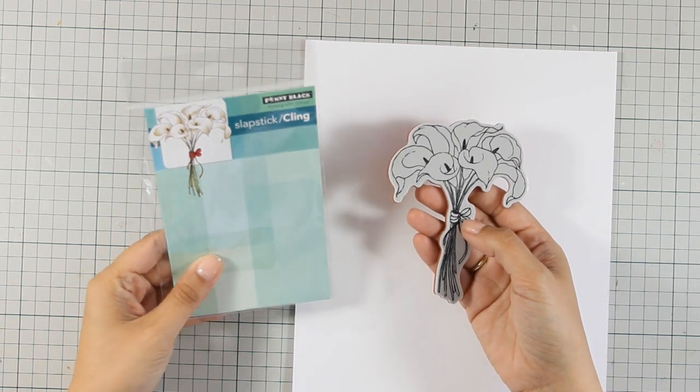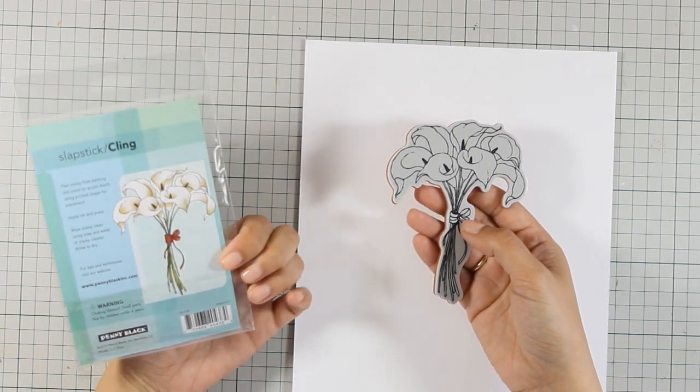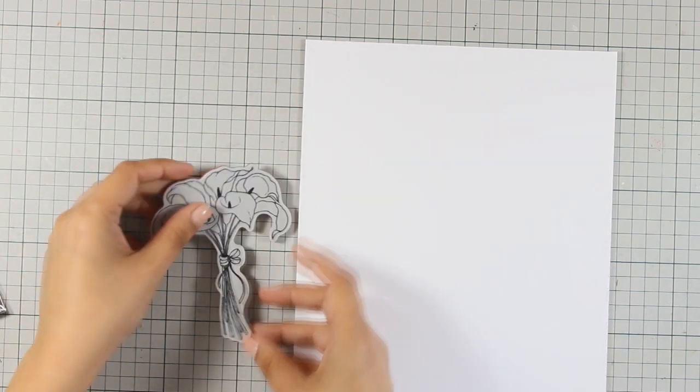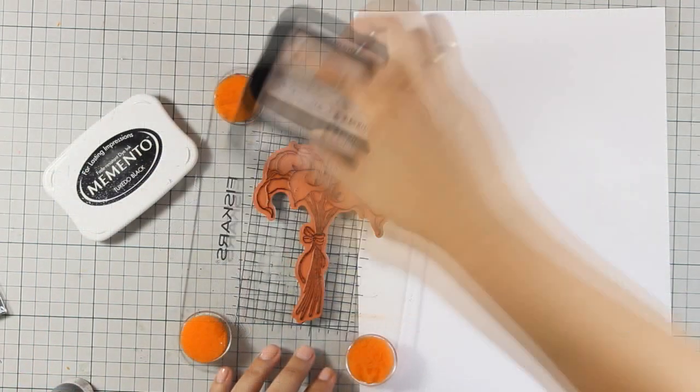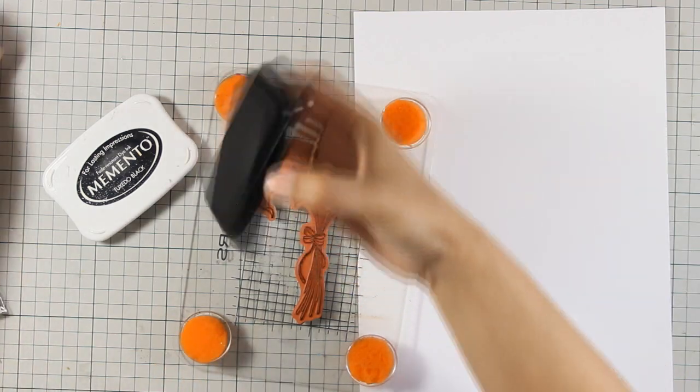Today I will be using this gorgeous bouquet of flowers called Elegance, and I am going to stamp it on white cardstock using Memento Tuxedo Black ink.